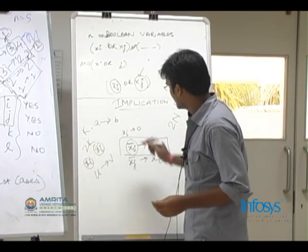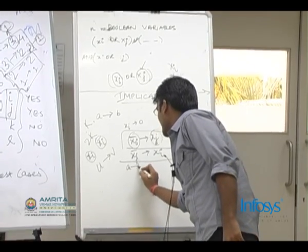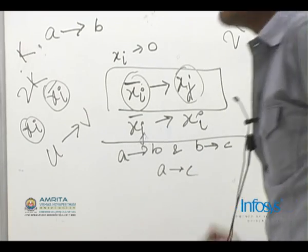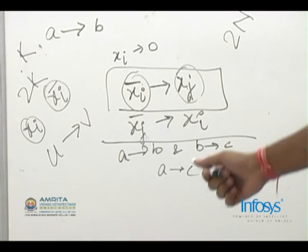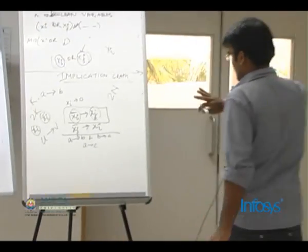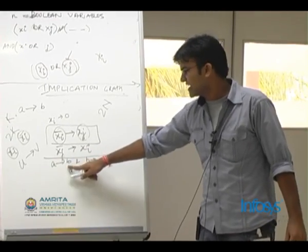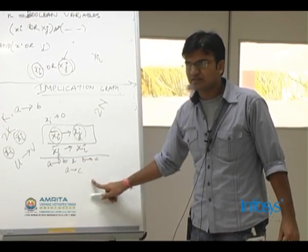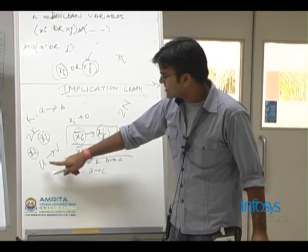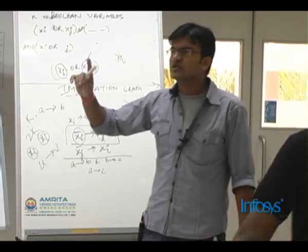Before I move on to that, do you guys understand if A implies B and B implies C then A implies C? These are basic postulates of Boolean algebra. So similarly if you make up a graph for this, if there is a path from U to some vertex V then that would mean that U implies V.